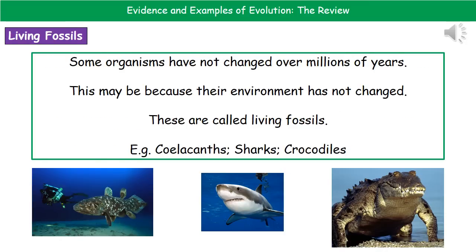Another source of evidence for evolution comes from living fossils — organisms that have not changed over millions of years, possibly because their environment hasn't changed. Three examples are shown: the coelacanth on the left, a shark in the middle, and crocodiles on the right. These are organisms that just haven't changed over millions of years because their environment hasn't really changed and they've had no need to evolve.